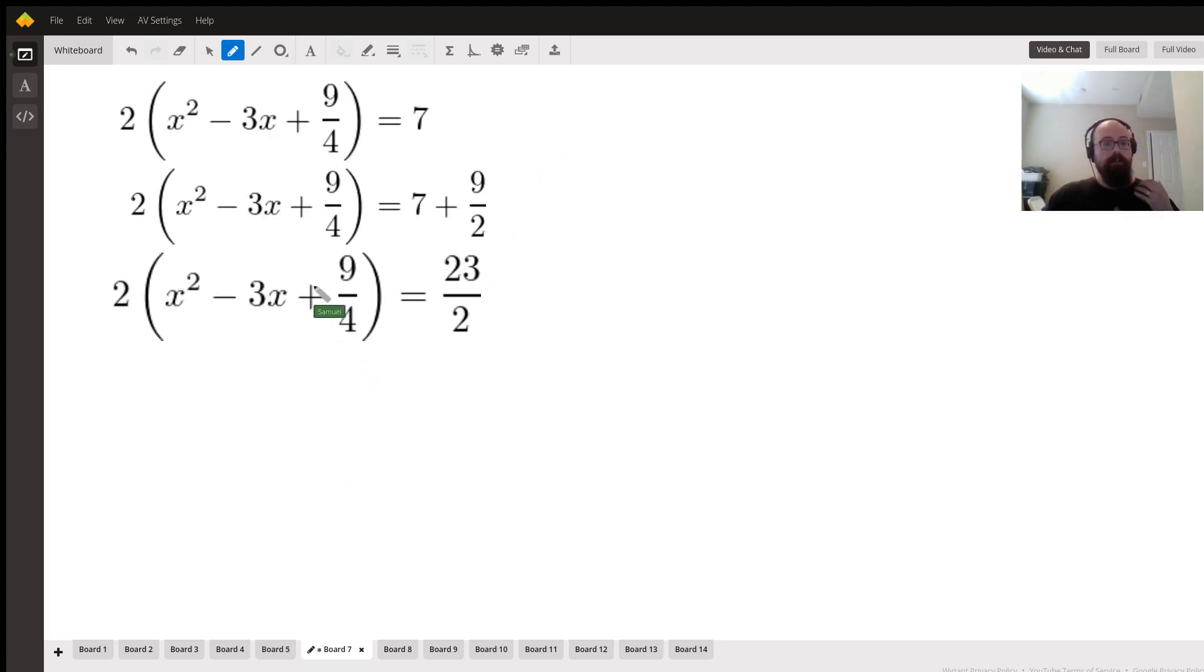Now, this therefore is going to become 2(x² - 3x + 9/4) = 7 + 9/2, and that just means that we're going to add 7 and 9/2 together, and that's going to give us 23/2.